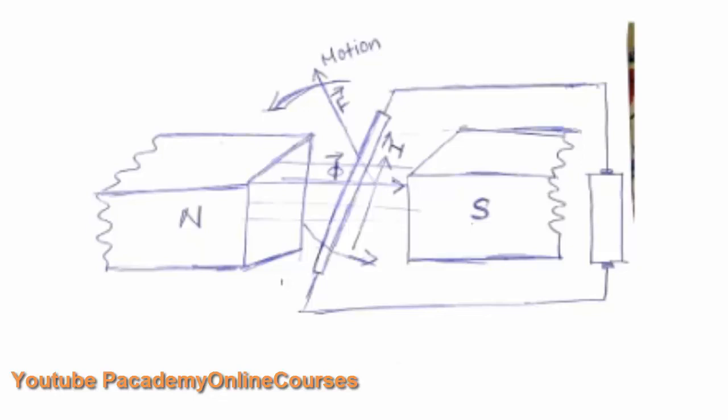You can see the direction of the field and the motion is always perpendicular to the field and the flux. The direction of the force is shown — the force causes a torque and the torque will cause a motion, and the direction of the force is always given by Fleming's left-hand rule.